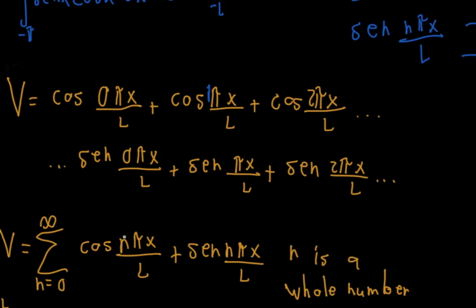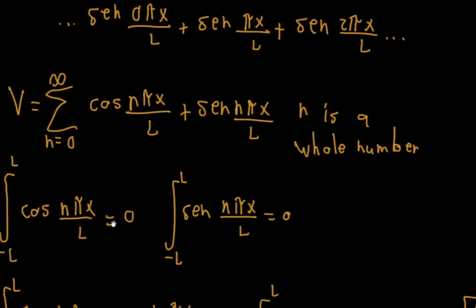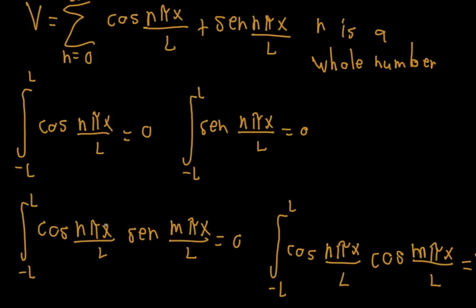Fourier was thinking, which properties does this vector space have? And this vector space has some very useful properties. The first thing is that these integrals are zero — you can test them yourself. The second thing is that cosine and sine, these two are always zero, it doesn't matter what n or m are, as long as n and m are whole numbers. What does this mean? This means that all the base vectors of cosine and all the base vectors of sine are orthogonal to each other, always. So all the cosines are orthogonal to all the sines.